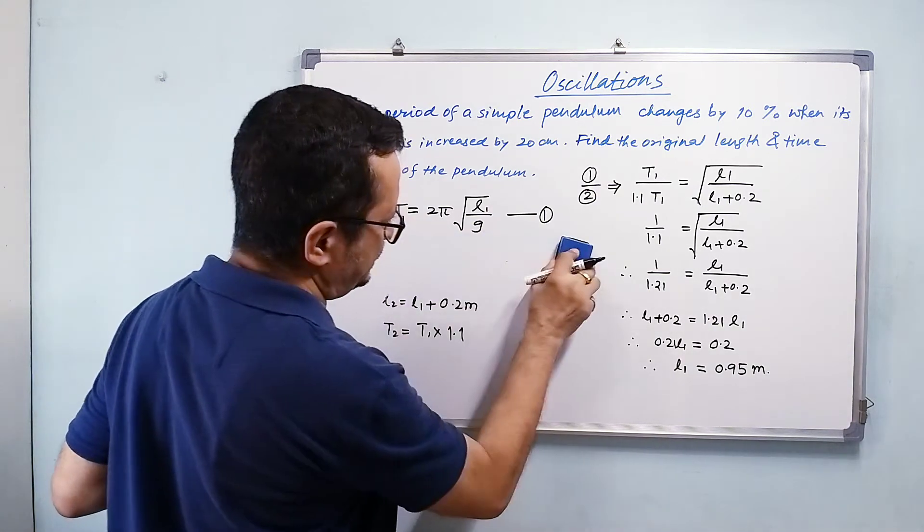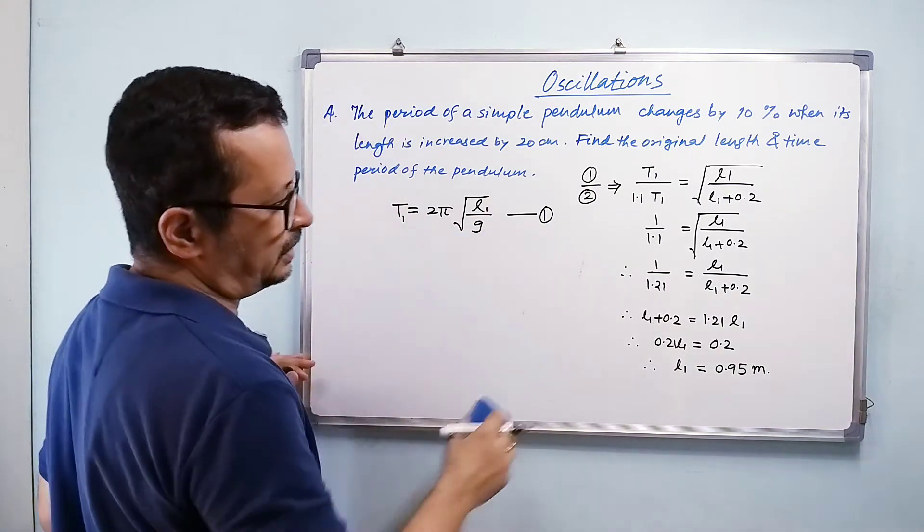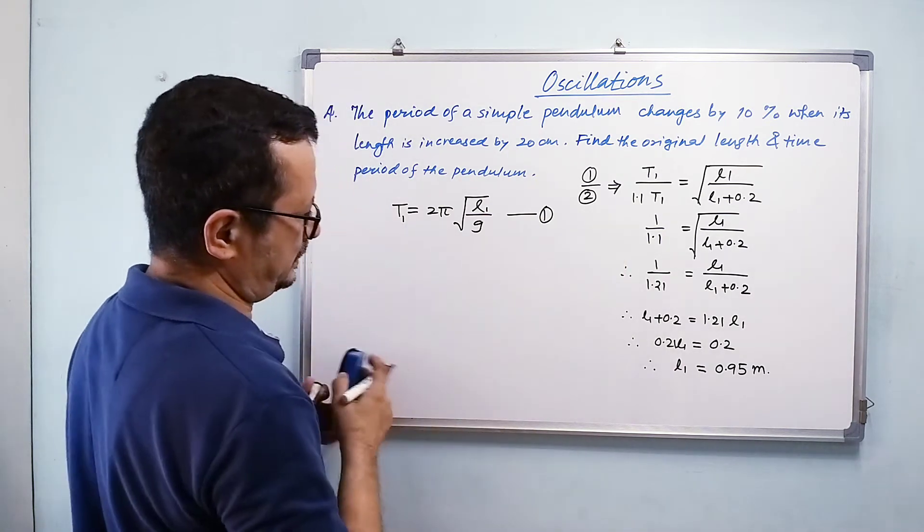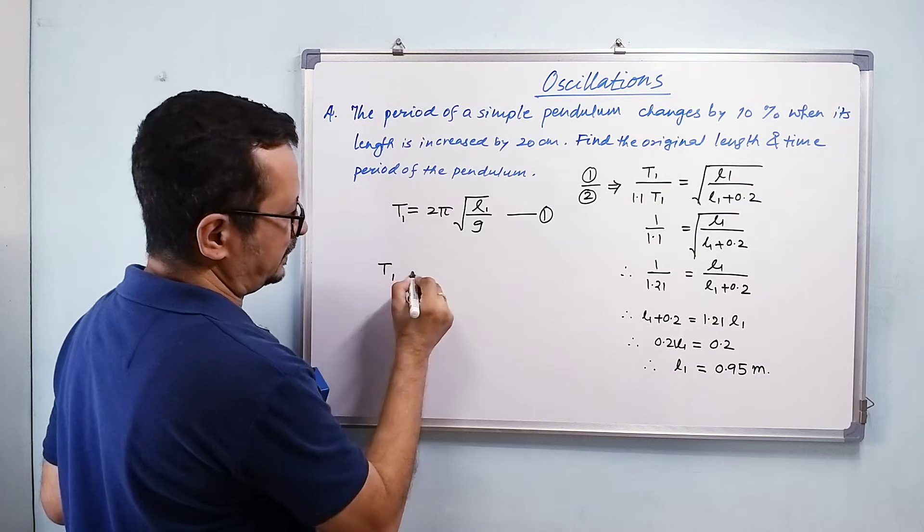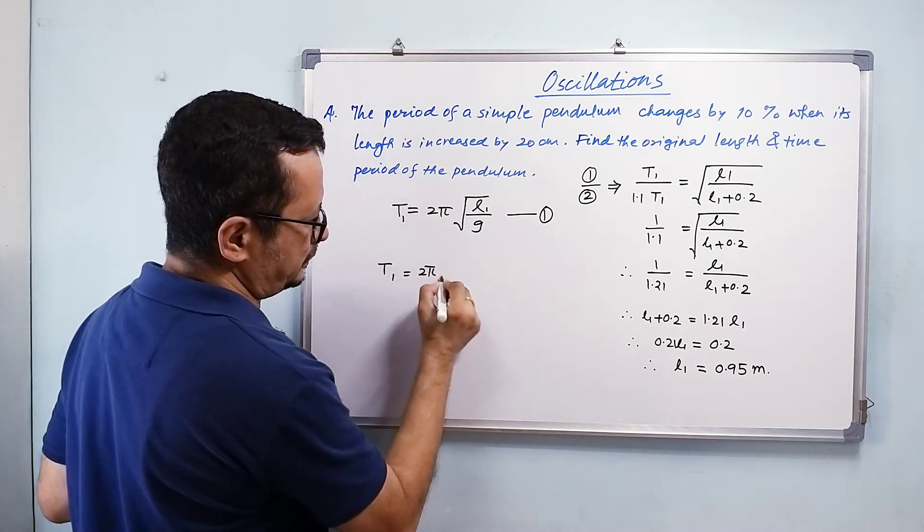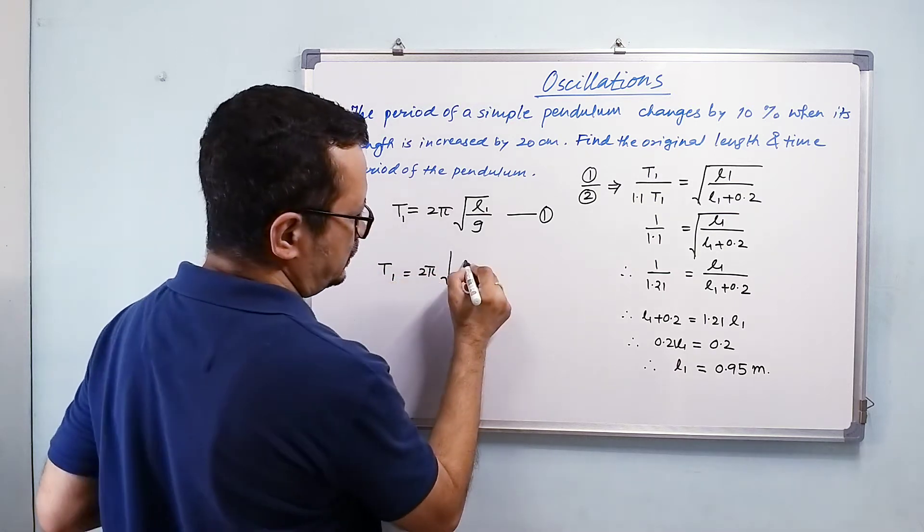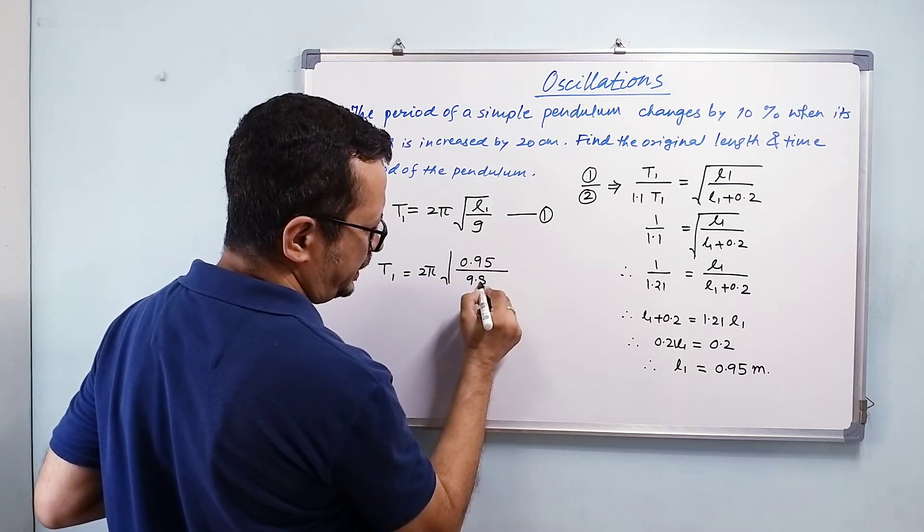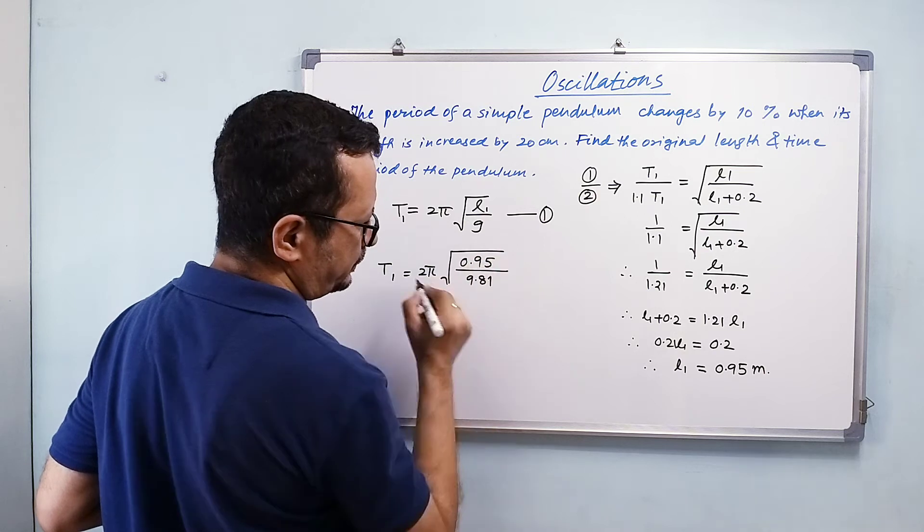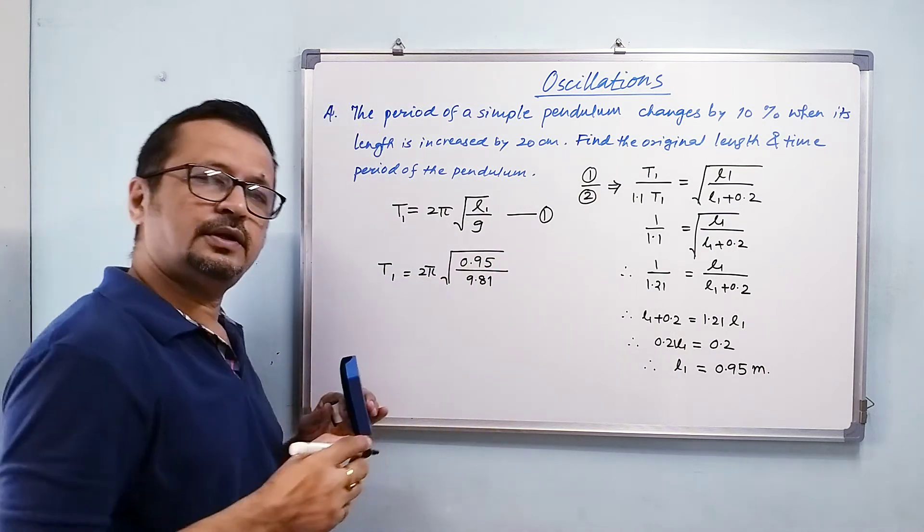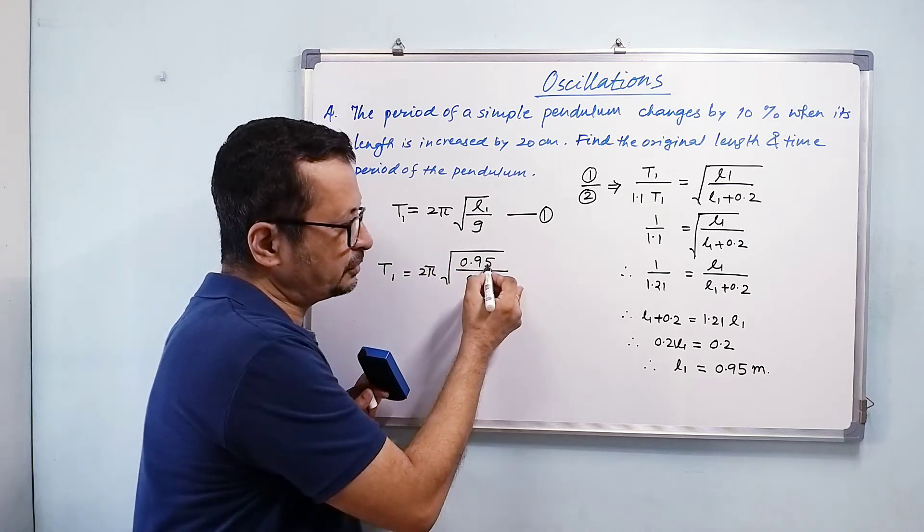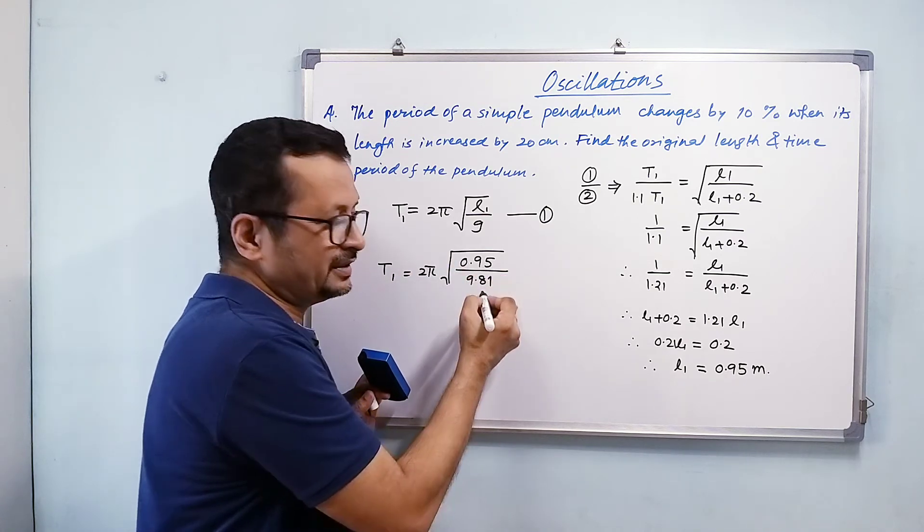So now I would say T₁ = 2π√(0.95/9.81). Now how would you do this calculation? What you need to do is take this ratio...